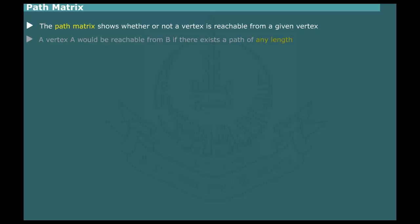Path matrix. A path matrix for a graph shows whether or not a vertex is reachable from a given vertex, irrespective of the path length. In other words, a vertex A would be reachable from B if there exists a path of any length.